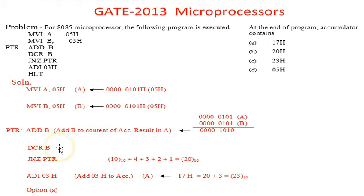The content of B is 05 and this is to be decremented. JNZ PTR means jump on no zero - if the zero is not there, then you have to jump to PTR and keep on executing the loop till the content of B becomes 0.